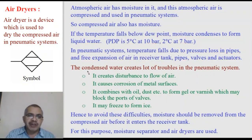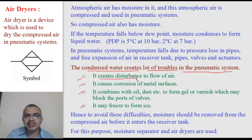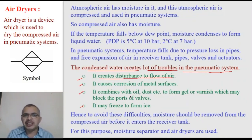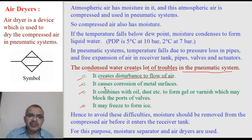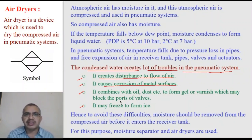The condensed liquid water creates several troubles in the pneumatic system. First, water creates disturbance to the flow of air — air cannot flow easily if water droplets or bubbles are present in the pipe. Second, water causes corrosion of metal surfaces such as pipe walls and cylinders, and rust may form.